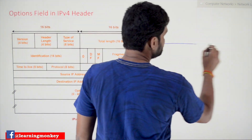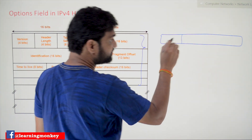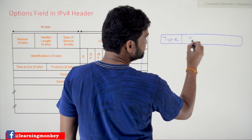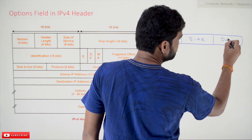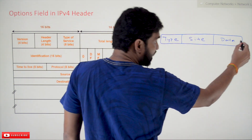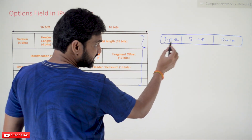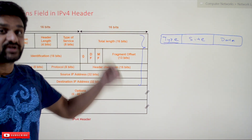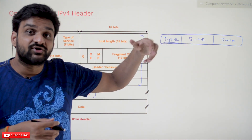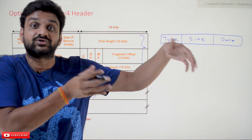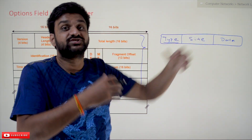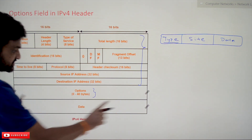Each option is represented using three different fields: option type, option size, and option data. If you want to insert another option after the first, the same structure repeats — option type specifies what type of option you are inserting, option size tells how large it is, and option data contains the actual data for that option. This is how options get accommodated within the 40 bytes of space.